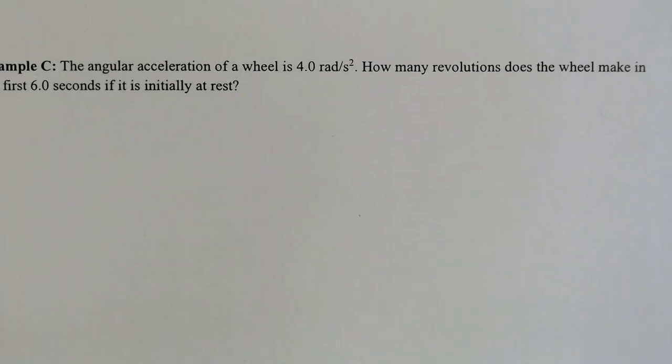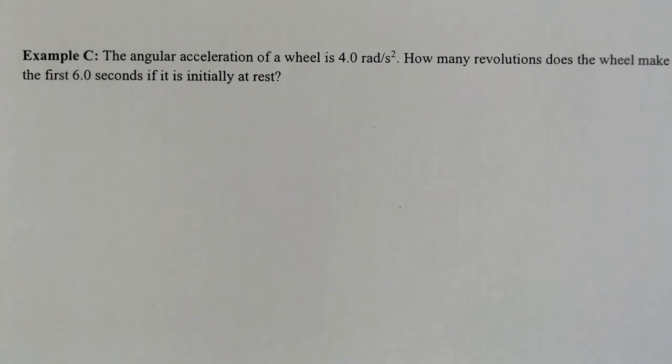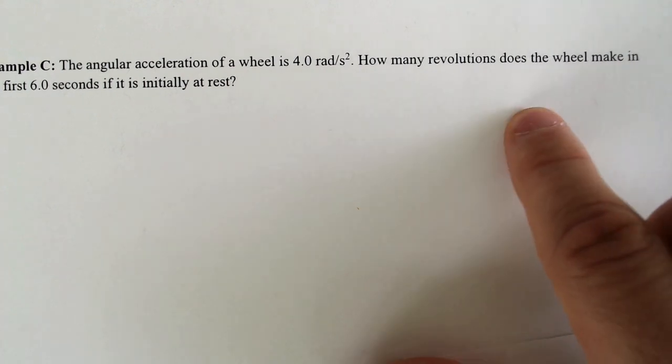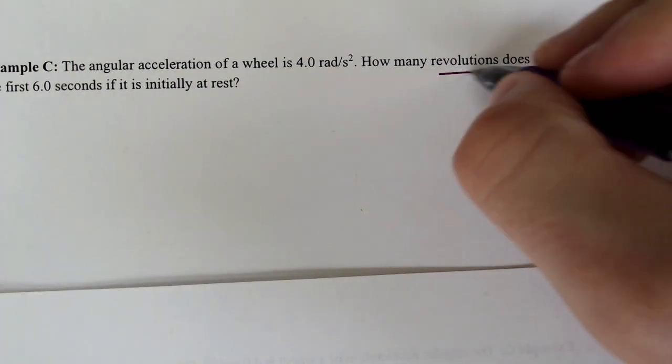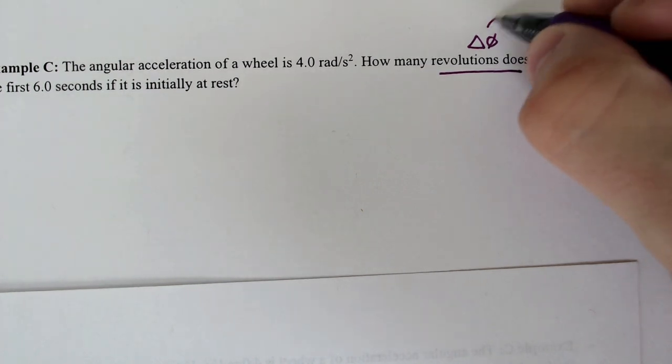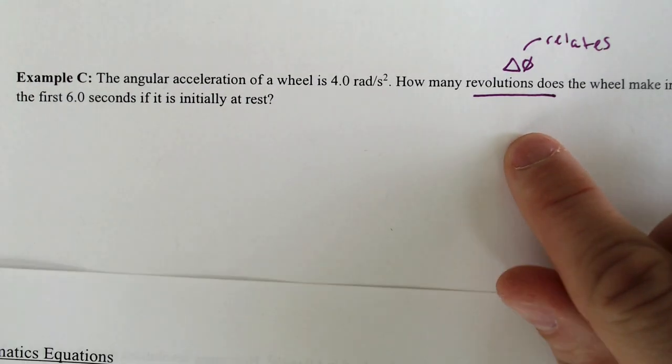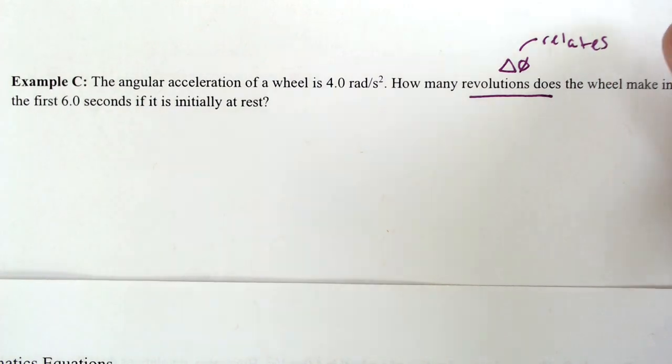All right. Got two more examples. I might do two. I might do one. The angular acceleration of a wheel is 4 radians per second squared. How many revolutions does the wheel make in the first six seconds if it is initially at rest? So first and foremost, radians per second squared, correct format. Six seconds, that's the correct format. Our answer is going to be having to be converted because we're going to get our first answer and then we're going to have to convert it into revolutions. We need to figure out how many revolutions, which relates to the change in angle, so we need to find something that has a Δθ. We need to find something that has acceleration and a time.